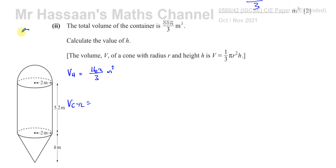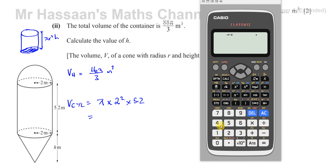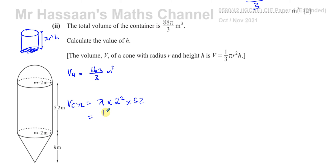A cylinder is a prism, so its volume is the cross-sectional area times the height: πr²h. In this case that's π × 2² × 5.2 (since 5.2 meters is the height of the cylinder — h is the unknown height of the cone). So the volume of the cylinder is π × 4 × 5.2 = 20.8π = 104π/5 meters cubed.